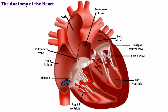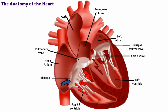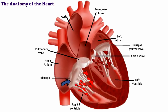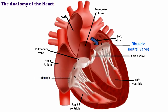When the AV valves close, they prevent blood from flowing back into the atria while the ventricles are contracting. The tricuspid has three flexible cusps, or flaps, and the bicuspid has two.